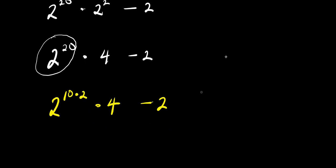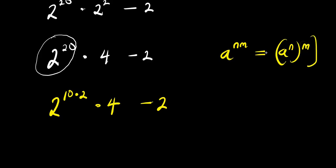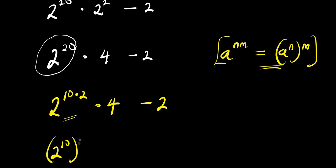If you have a to the power of n times m, this equals a to the power of n, raised to the power of m. We apply this right here. That means we are going to have 2 to the power of 10, raised to the power of 2, times 4, then we have minus 2.